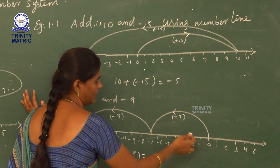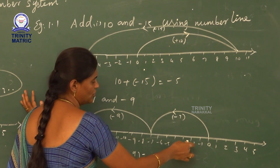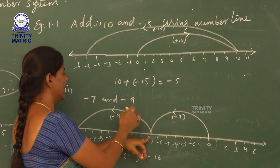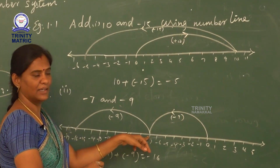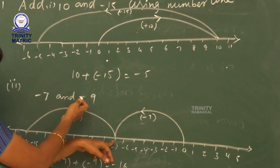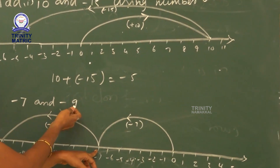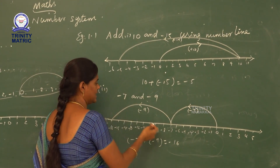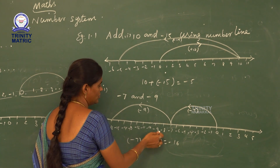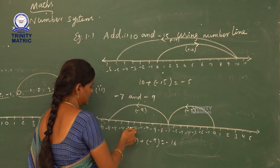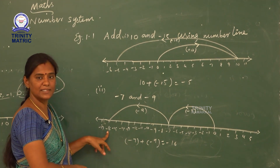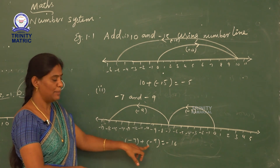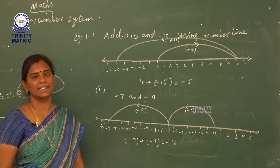From 0, counting 7 units left: 1, 2, 3, 4, 5, 6, 7. This is minus 7. Then minus 9 — again we have a negative integer, so we move left again. From minus 7, we count 9 units to the left: 1, 2, 3, 4, 5, 6, 7, 8, 9. The final answer is minus 16. That is minus 7 plus minus 9 is equal to minus 16.